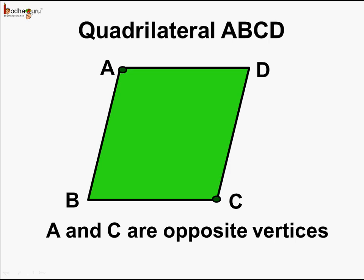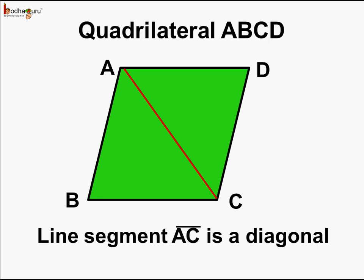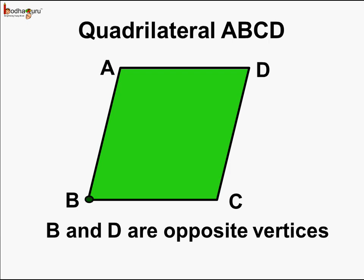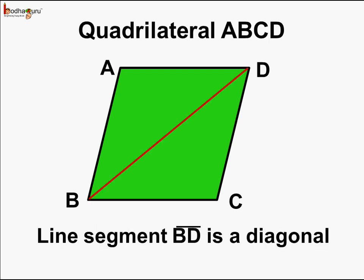This is vertex C and this is vertex A, and these are the opposite vertices. Now if we join the opposite vertices — vertex A and vertex C — by a line segment, we get a diagonal. So line segment AC is a diagonal. Same way, vertex B and vertex D are opposite vertices. And if we join them, we get a diagonal. So diagonal BD is a line segment which joins opposite vertices B and vertex D.